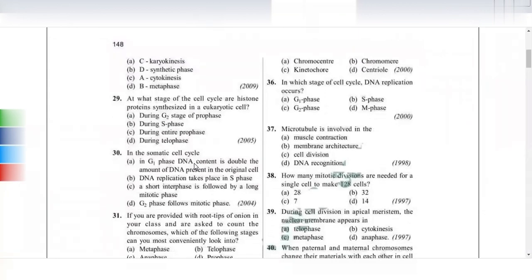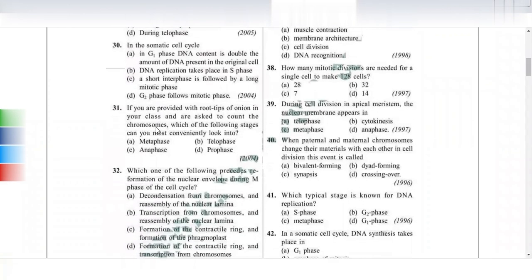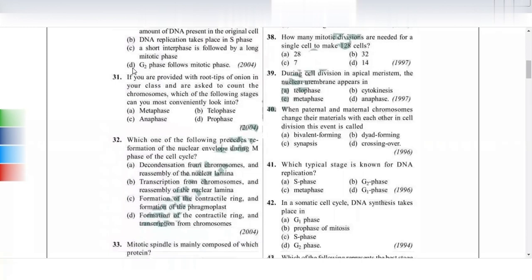At what stage of cell cycle are histone proteins synthesized in eukaryotic cells? Obviously S phase - synthesis phase. In a somatic cell cycle, DNA replication takes place in S phase, which is correct. If you are provided with root tips of onion and asked to count chromosomes, which stage is most convenient to look at? Obviously metaphase - metaphase is the best stage for chromosome counting.